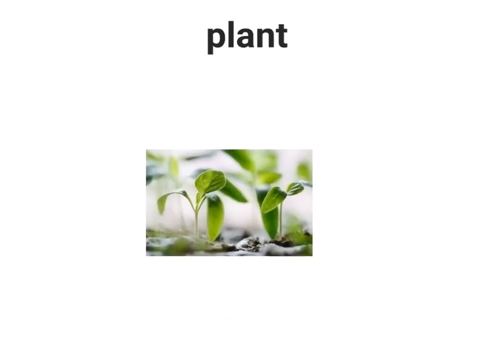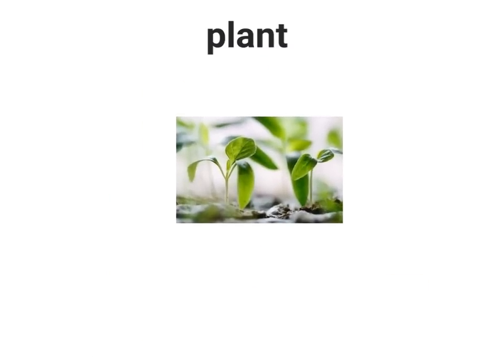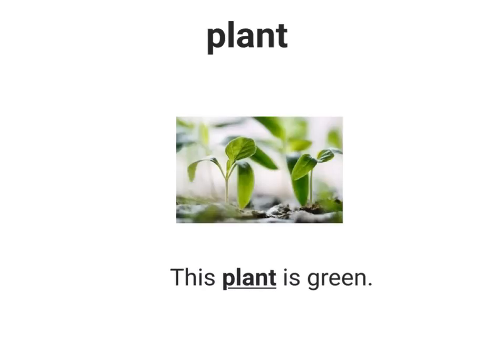The next word is plant. A plant looks like this. A sentence with the word plant in it is: This plant is green.